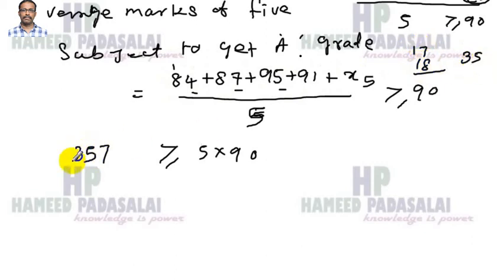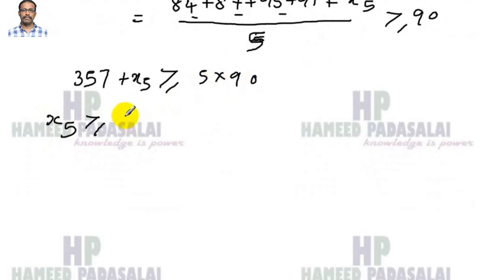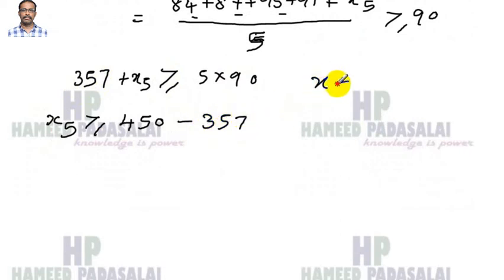So 357 plus x5 — now let x5 equal 5 into 90, which gives 450. So x5 equals 450 minus 357.